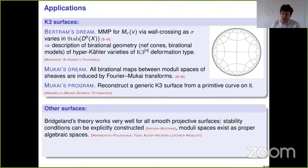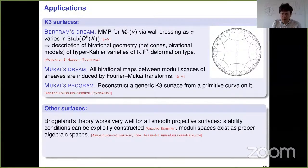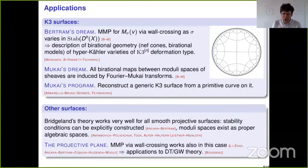Briefly on other surfaces: the general theory works well, stability conditions were constructed explicitly by Okounkov-Bertram, and moduli spaces of semi-stable objects exist as proper algebraic spaces using the notion of good moduli spaces. This program has also been very successful for the projective plane — the complete relation between wall crossing and the minimal model program of the moduli space works here too, proved by Junie Lee and Charlie Zhao, based on work by quite a number of people. This in turn led to applications to Donaldson-Thomas and Gromov-Witten theory in the work of Pierre-Rick Brousseau.